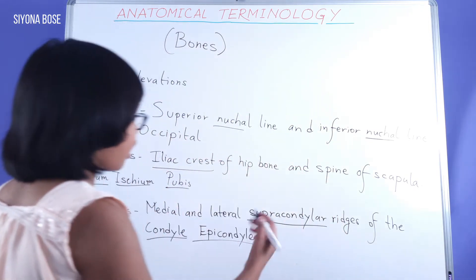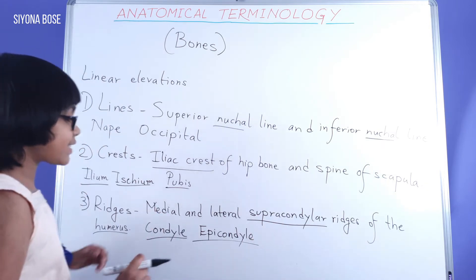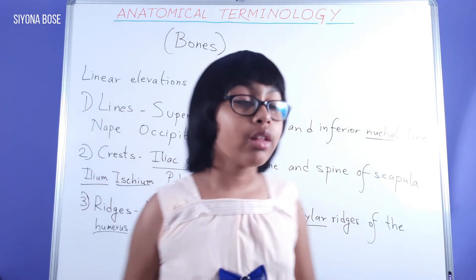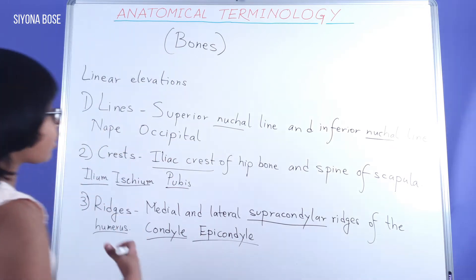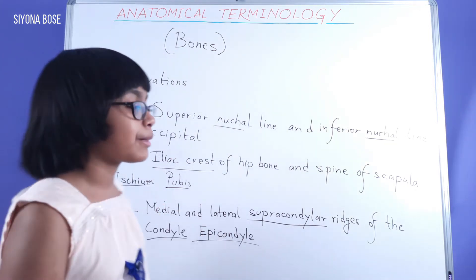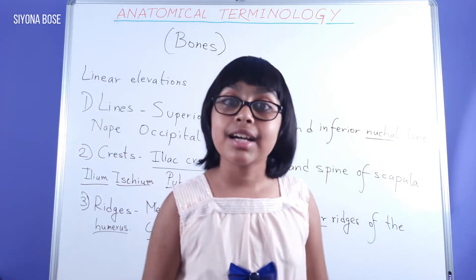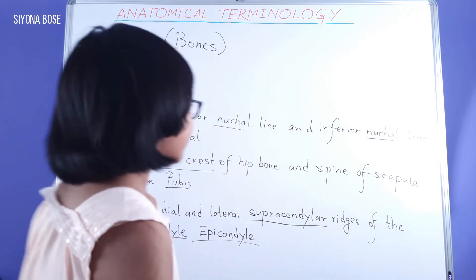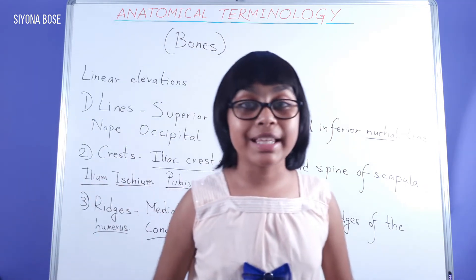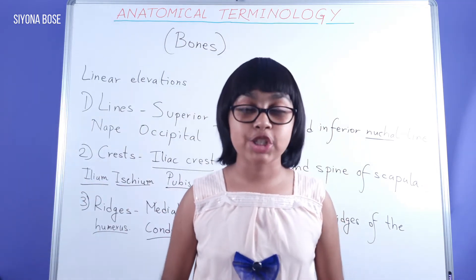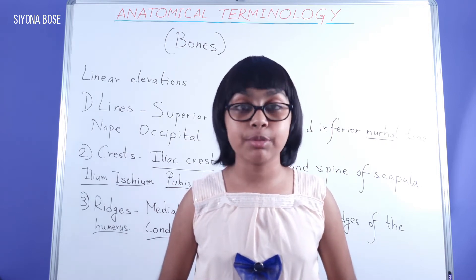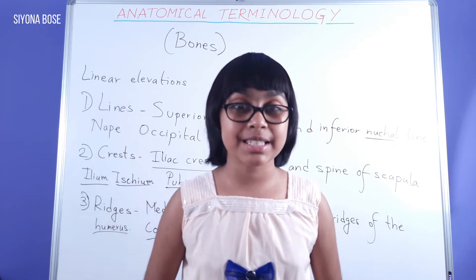The supracondylar ridges of the humerus — there are two ridges, medial and lateral, which are above the epicondyles: the medial and lateral epicondyles of the humerus. Those were some terms relating to linear elevations. You may take a look at the board before we move on.